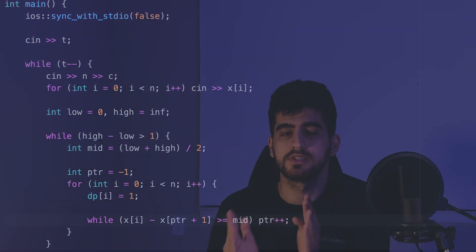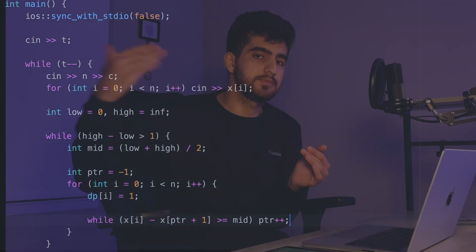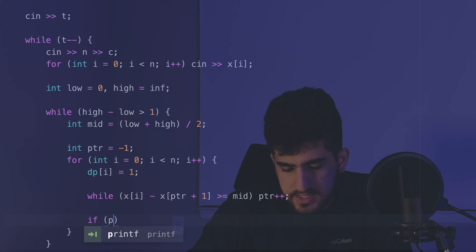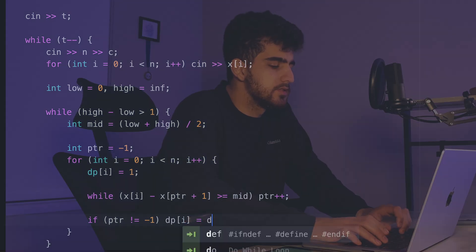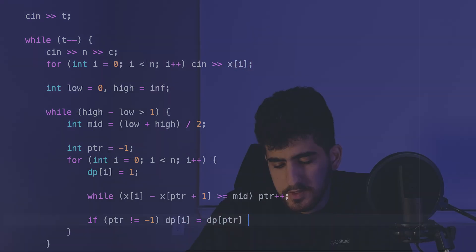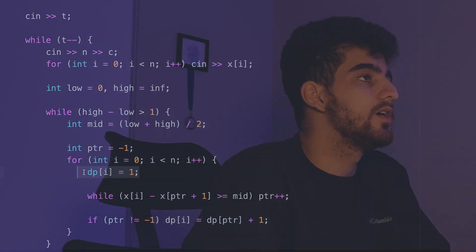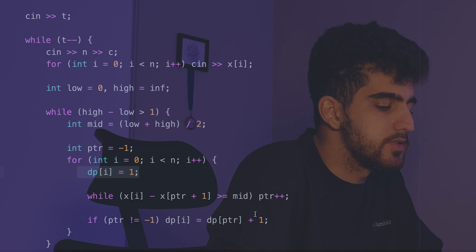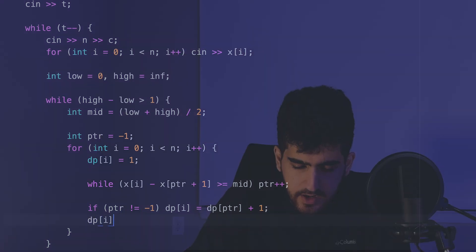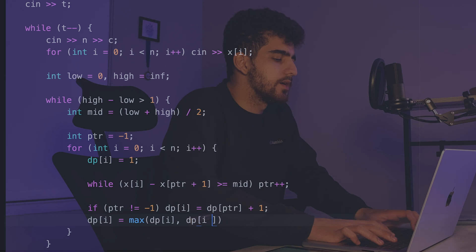And then while x of i minus x of ptr plus 1 was greater than or equal to mid, ptr plus plus. While the next cow, the distance of next cow from our current cow is greater than or equal to mid, add ptr. And then we can say that if ptr was not equal to minus 1, dp of i is equal to dp of ptr plus 1. And then dp of i is equal to maximum dp of i and dp of i minus 1, and I should say if i was not zero.